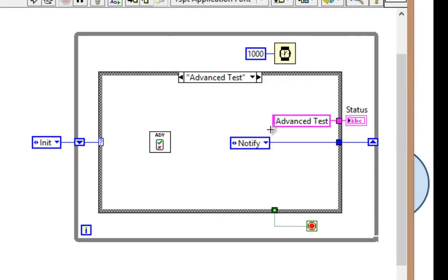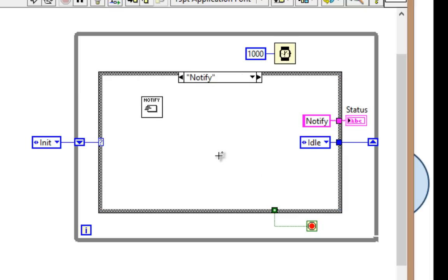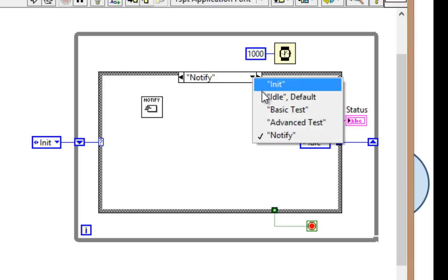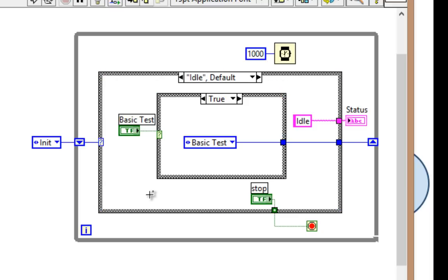Going to advanced test, we see we just performed that test and always go to notify. In the notify, we just call the notify sub-VI. And back to idle, where we wait on our user to tell us what to do next.